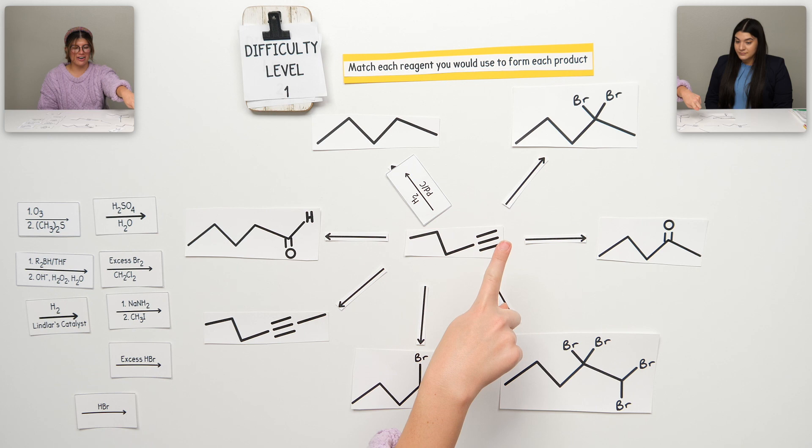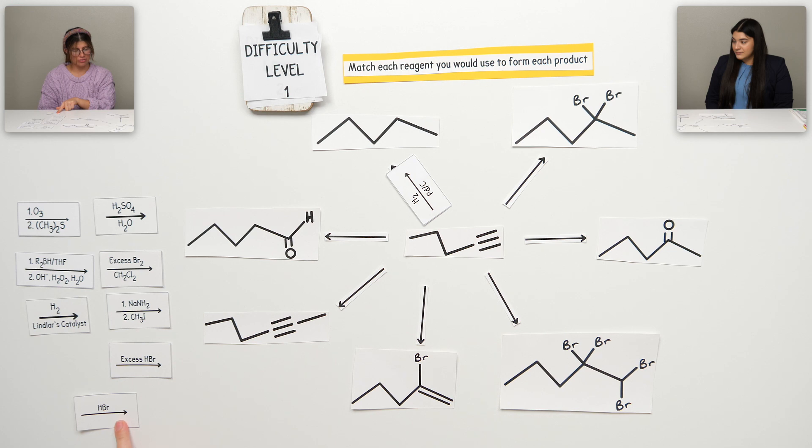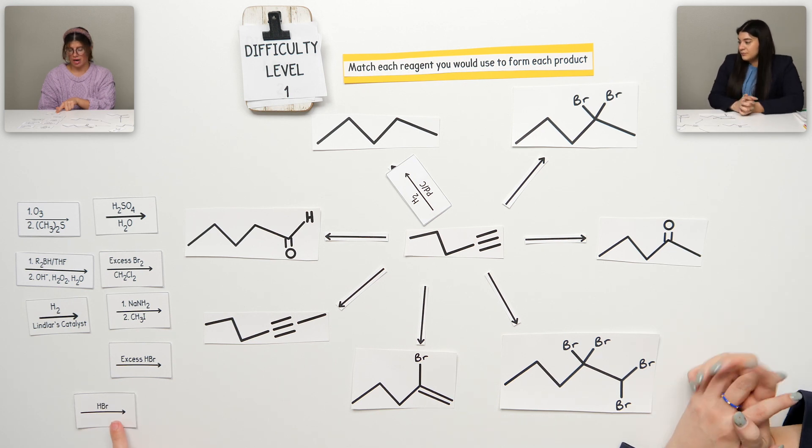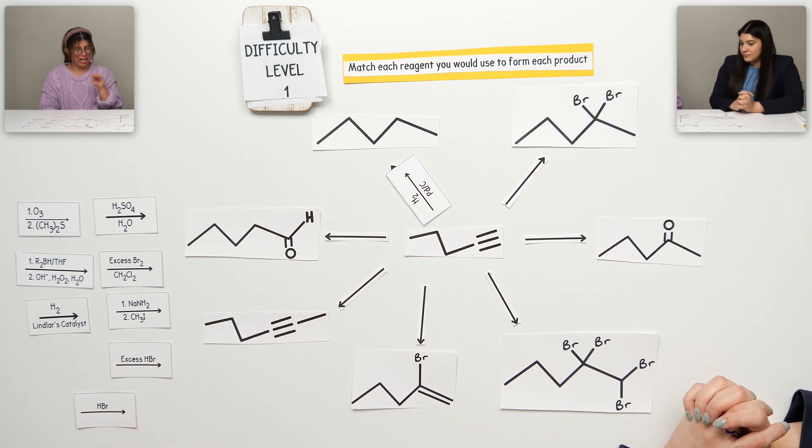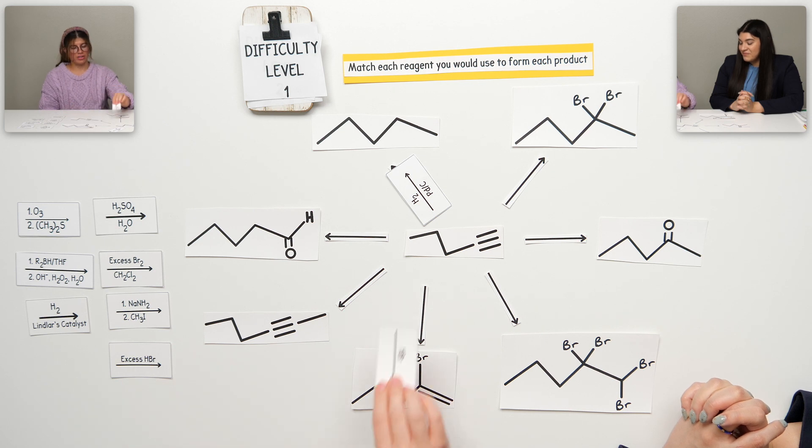And then this guy up there, that one is, I'm trying to remember this one. Hydro? Wait, no, it wouldn't be. How do we know? Because I'm looking, that one has just alkanes. The double bonds are gone. So this one would be hydrohalogenation. You're right.